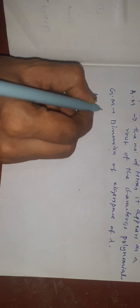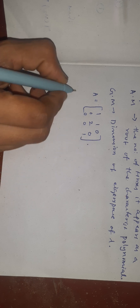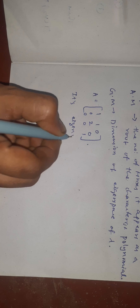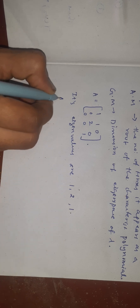In option 2, the matrix A is given as 1, 1, 0, 0, 2, 0, 0, 0, 1. Its eigenvalues are 1, 2, 1. Here 1 appears 2 times, so the algebraic multiplicity of 1 is 2. Now let us find its geometric multiplicity.